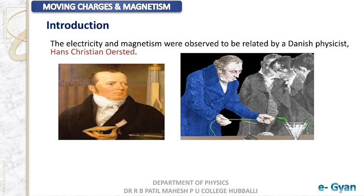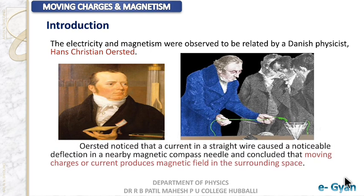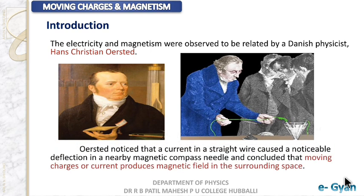His observation led him to try a few experiments to find a stable reason for it. What he noticed in his lecture was that when a current carrying wire was brought close to the magnetic compass, the compass started to deflect, and this made him perform an experiment which we are going to see in the following slides.